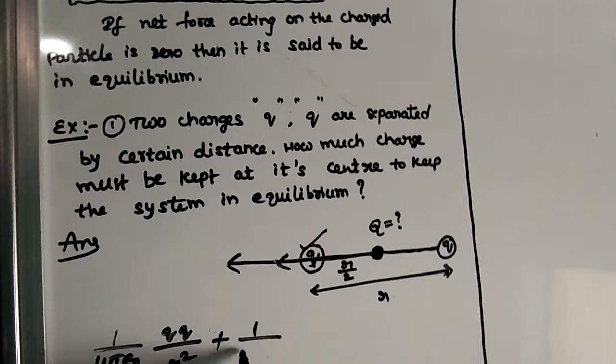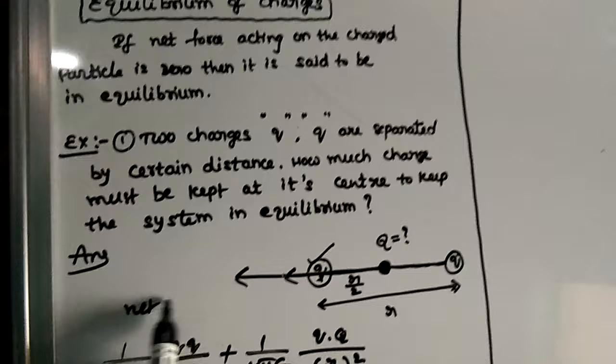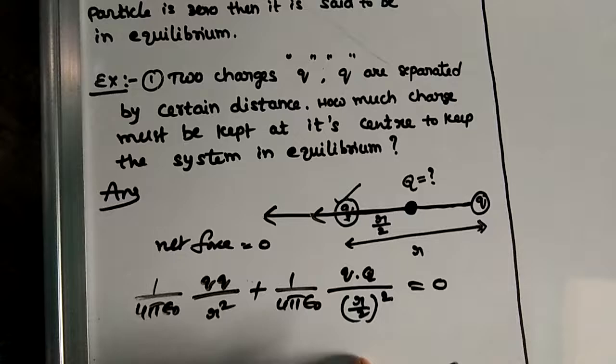So this force is nothing but 1 by 4π epsilon_0, Q into Q by distance is nothing but R by 2, R by 2 whole square. I told you, net force is zero. So this is equal to zero. Calculate this thing. I think 1 by 4π epsilon_0, Q that is cancel, R square also cancel.